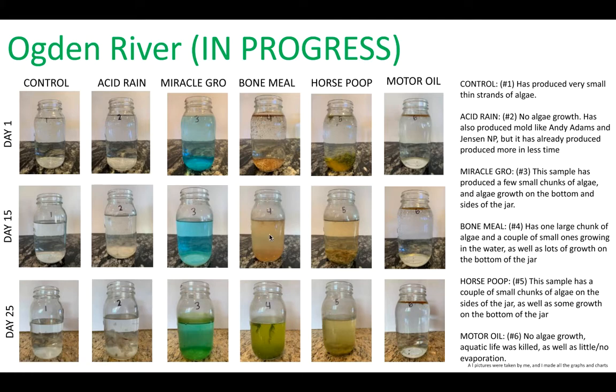Ogden River one is still in progress, that's why it only has 25 days, but the acid rain, you can see how dark the mold is in this one. And the Miracle Gro and Bone Meal both still produced algae. This one produced chunks, and this one's mostly just on the jar.